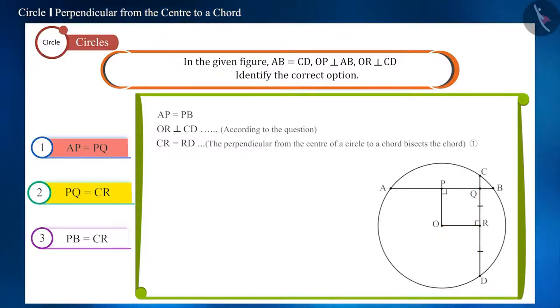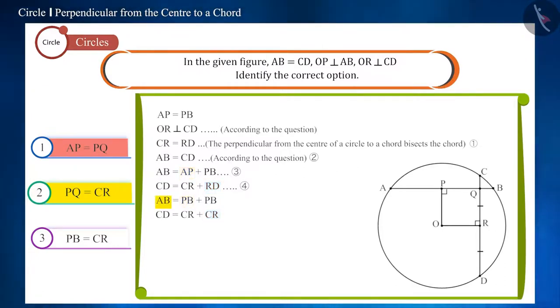And we are also given that these two chords AB and CD are equal. According to the figure, we can write AB equals AP plus PB, and CD equals CR plus RD. And we know that AP equals PB and CR equals RD. So, if we put PB in place of AP and CR in place of RD, then we will get AB equals 2PB and CD equals 2CR.